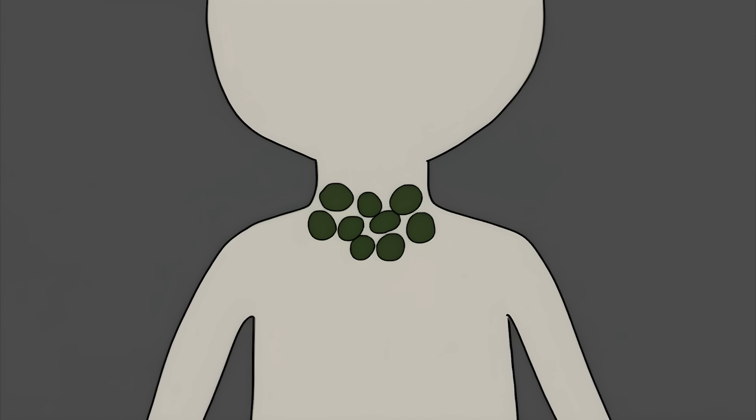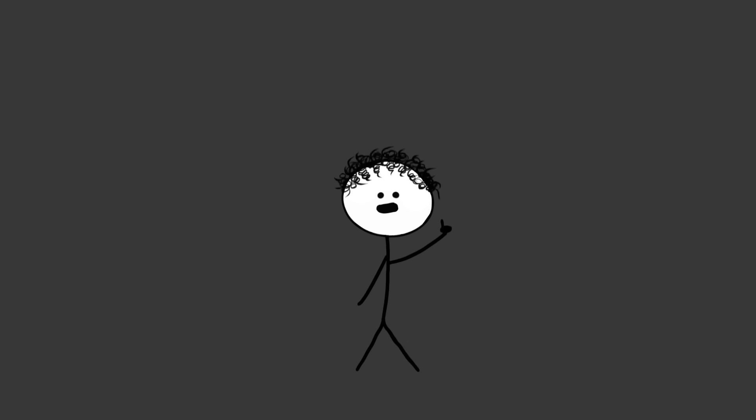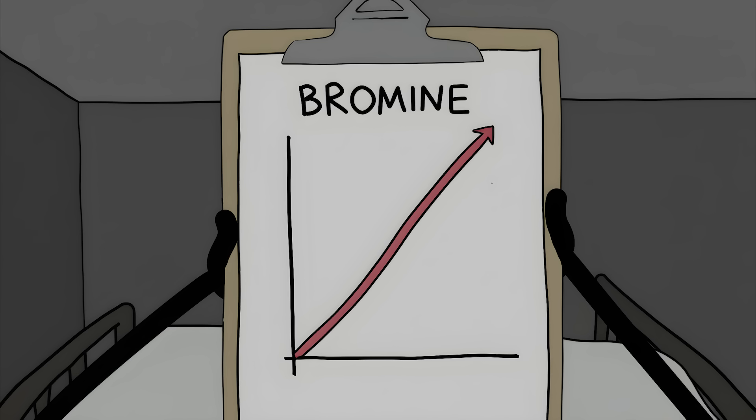It was replacing iodine in their systems, which can mess with your thyroid. One guy ended up in the hospital after drinking nothing but ruby red squirt for months. His skin turned red, he couldn't walk, and he was having memory problems. Doctors found his bromine levels were through the roof.